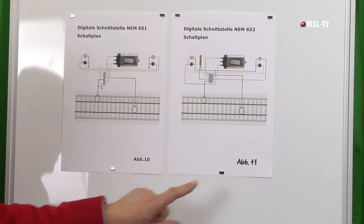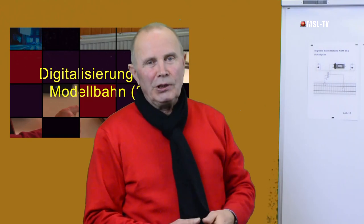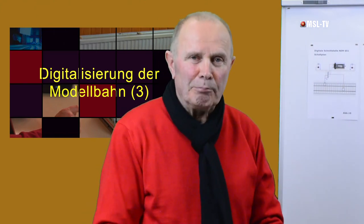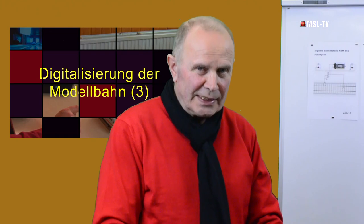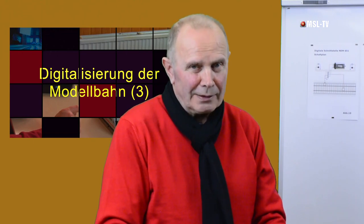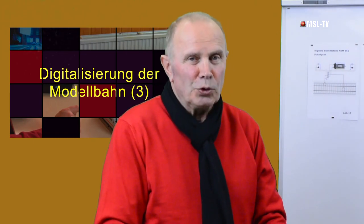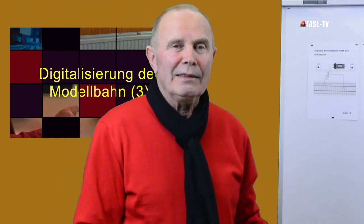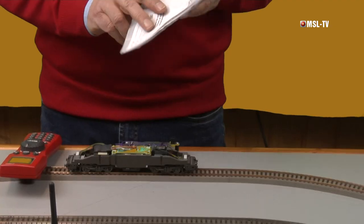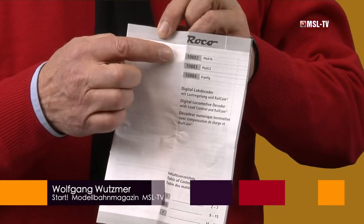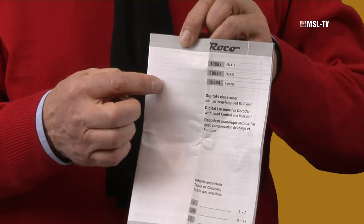Noch einmal zu den Schnittstellen: Sie müssen beim Decoder-Kauf wissen, welche Schnittstelle Ihre Lok hat – ansonsten ist jeder Decoder-Kauf hoch riskant. Das müssten Sie sich notieren. Das Einfachste ist, wenn Sie für jeden Decoder das beiliegende Blatt, die Bedienungsanleitung, gut aufheben und oben vermerken, welche Lok, welcher Hersteller und die Artikelnummer dazu.